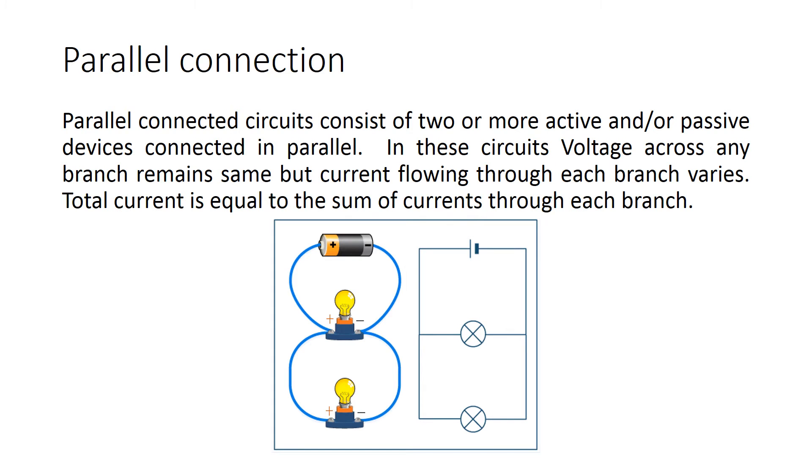Parallel connection. Parallel connected circuits consist of two or more active and/or passive devices connected in parallel. In these circuits voltage across any branch remains same, but current flowing through each branch varies. Total current is equal to the sum of current through each branch.